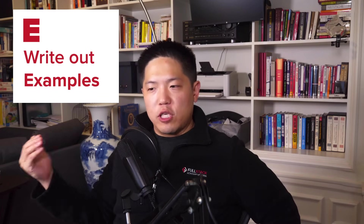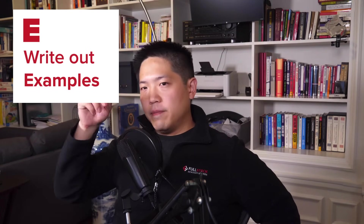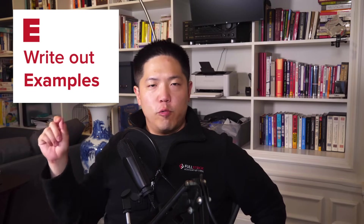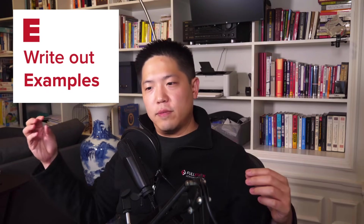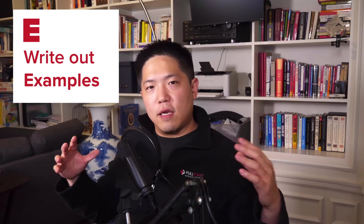Before you write any code, write out the parameters you're going to pass into your function and what you expect to get out. Create a two-column table: given these parameters, what output do you expect? This is another way to really understand what the question is asking, because you'll get a lot of understanding by mapping input to output. Think of the problem as a black box — given something into the black box, what comes out on the other side? Listing examples also keeps the conversation flowing and confirms you understand the question.